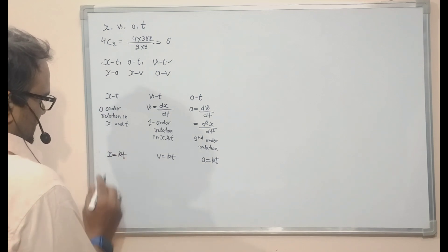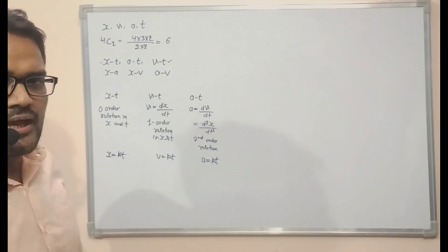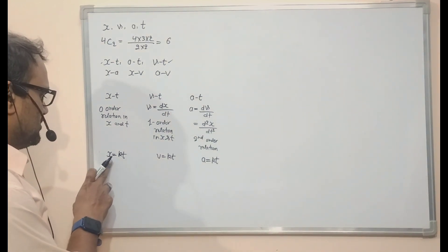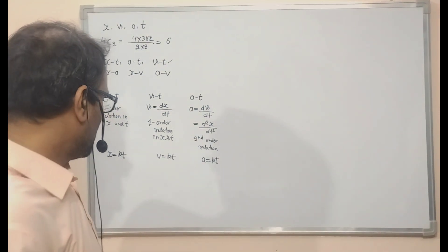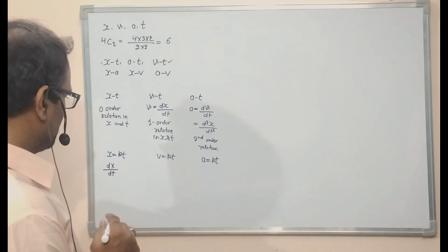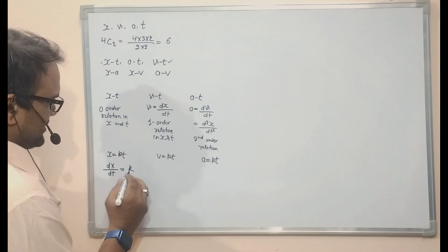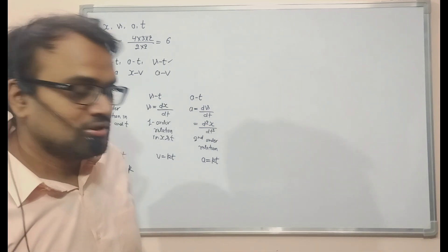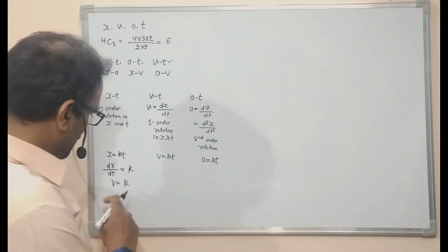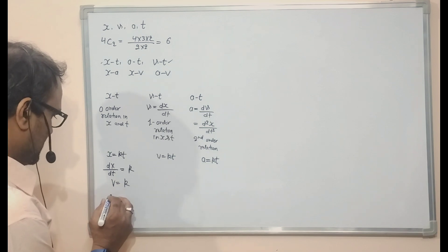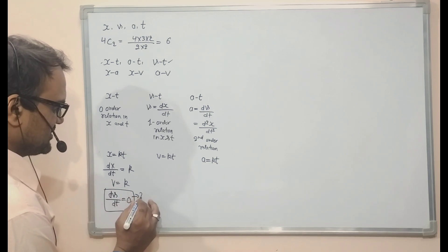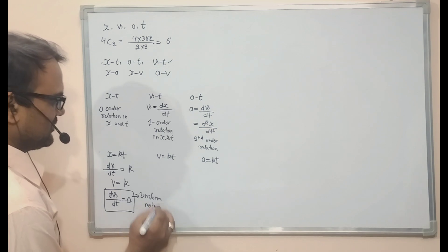The relation x = kt is the position-time relation of zero order. To find the velocity, I take the derivative of x with respect to time t: dx/dt = k. So the velocity comes out to be a constant quantity. Taking the derivative of this again with respect to time gives acceleration equal to zero. This is the case of uniform motion.